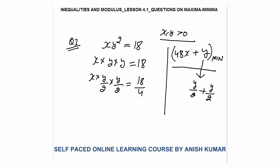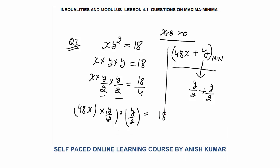Multiplying both sides by 4 converts the y-terms to y/2 and y/2, whose sum is y. Now taking the sum gives x + y, but we need 48x. So multiply by 48: 48x × (y/2) × (y/2) = (18/4) × 48. This is 18 × 12 = 216.